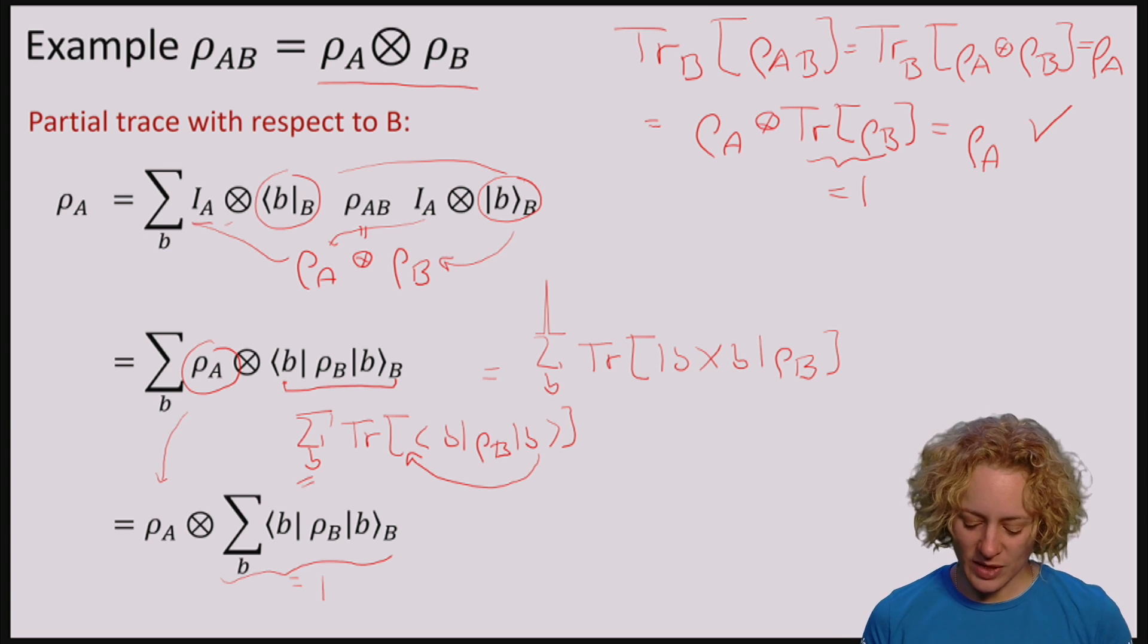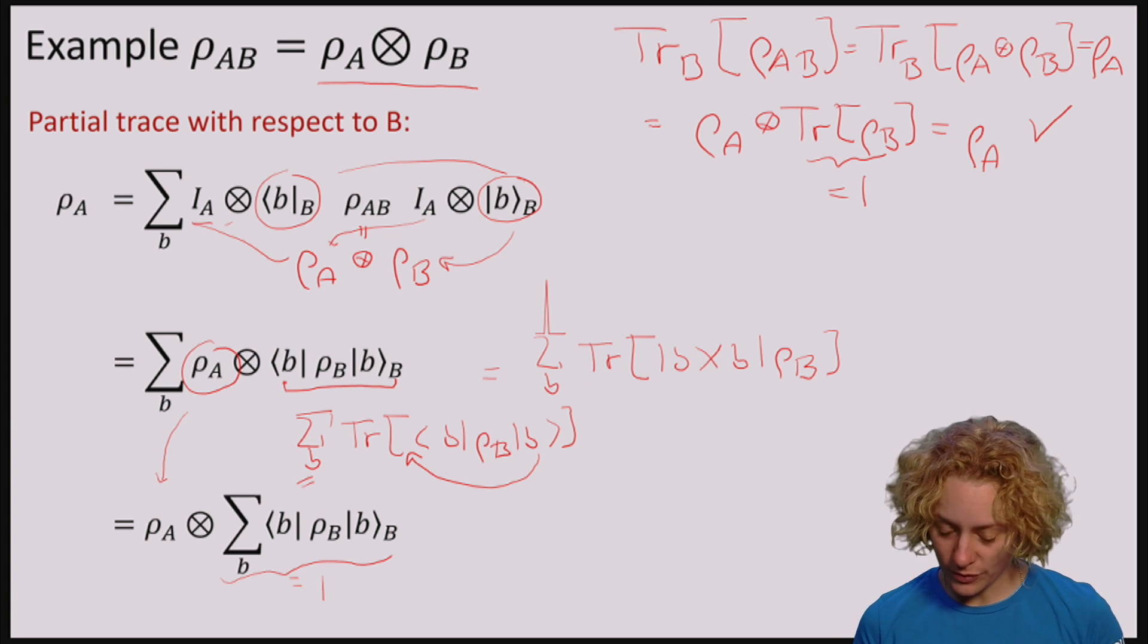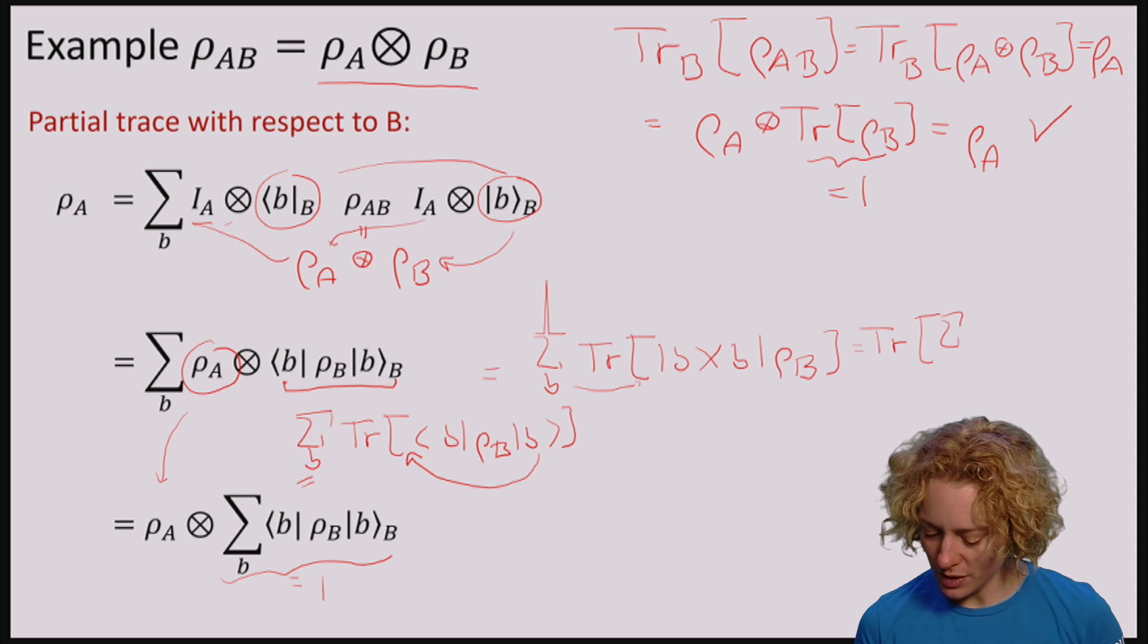Now because the trace is linear, I can move this sum over B inside. So I have the trace over sum over B, all the |B⟩⟨B|, ρ_B.